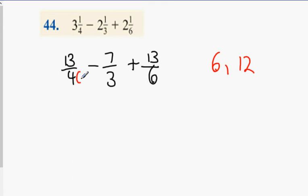What do you need to multiply 4 by to change it into 12? Luke. 3. So 3 on the top and 3 on the bottom. What do you need to multiply 3 by to turn it into 12? 4. 4 on the top and 4 on the bottom. And finally, what do you need to multiply 6 by to turn it into 12? 2 on top and 2 on the bottom.